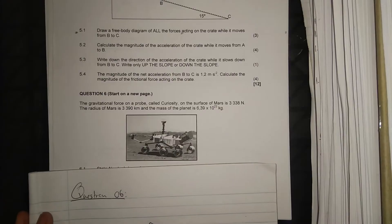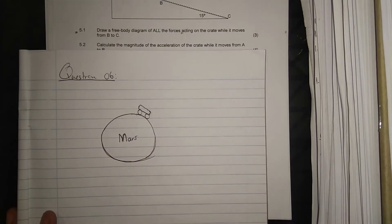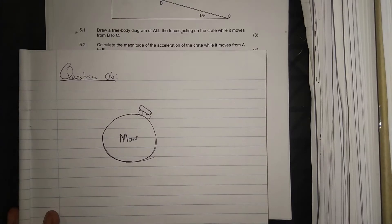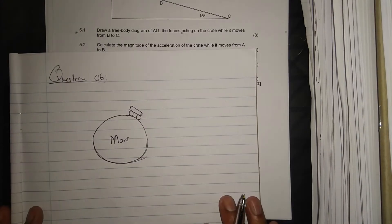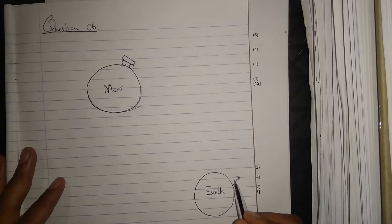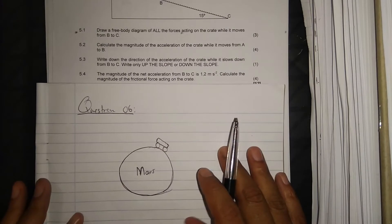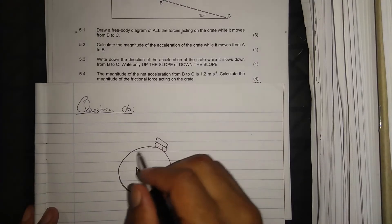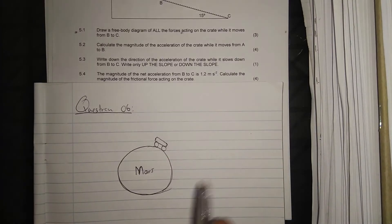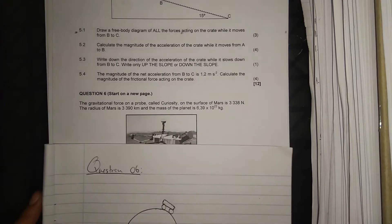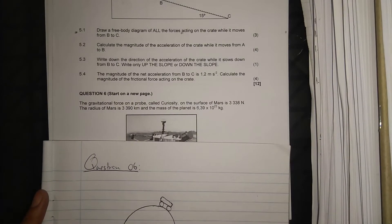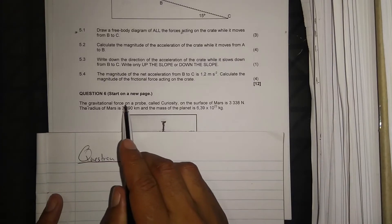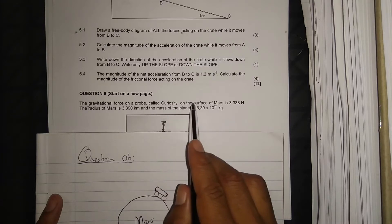Scientists on planet Earth are sending probes to planet Mars. A scientist in a lab is busy controlling Curiosity — acting like a driver from planet Earth — moving the probe around planet Mars to collect soil samples and explore the planet. So Curiosity is exploring planet Mars.